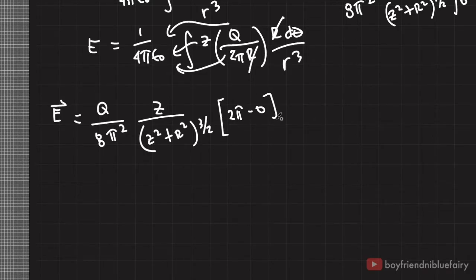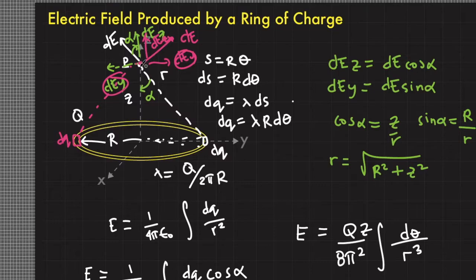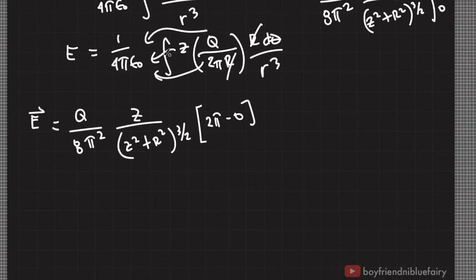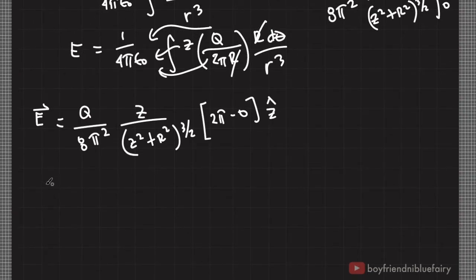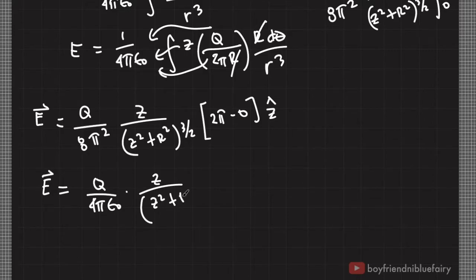The direction of the electric field is along the positive z-axis, because the only remaining components that do not vanish due to symmetry are the E sub z components. Since the ring of charge has a positive charge, the vector sum of the electric field at point P is along positive z-hat. The 2π terms cancel, and we end up with E equals Q over 4π epsilon-naught times z divided by (z squared plus R squared) raised to the 3/2, times z-hat. This is our expression for the electric field at point P.